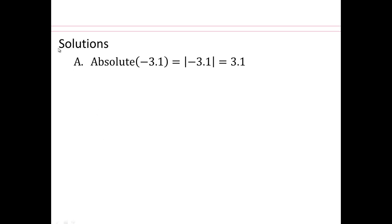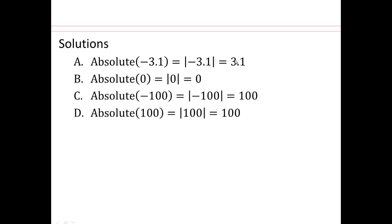So absolute value of negative 3.1 is absolute value of negative 3.1. That's 3.1 units away from zero, so that will be the answer. So see if you got all of them right.